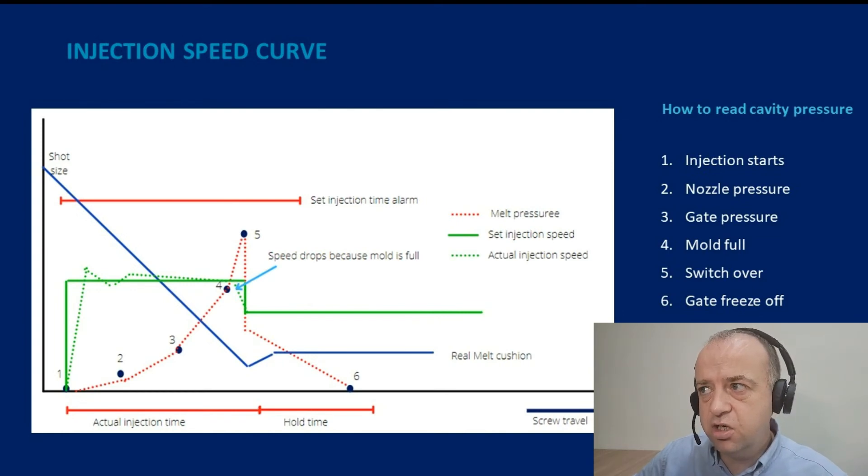Now once the part is full, so we said this position four was the position the mold was 100 or 98 percent full, and we said this position was where the mold was full of plastic. Now what we're going to see or we may see is the speed begin to reduce.